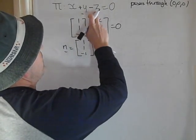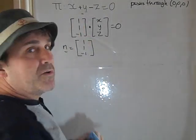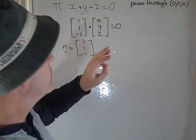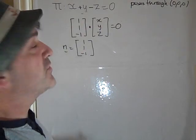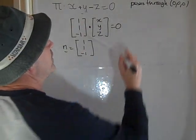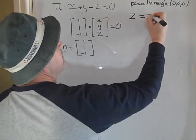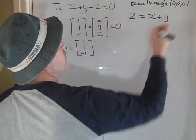So we've got x plus y minus z equals 0. We've got three unknowns, one equation. So if we do three, take away one, we've got two parameters. So we can write z by rearranging, moving it to the other side, z is x plus y.